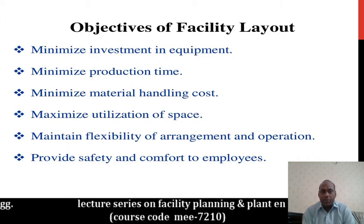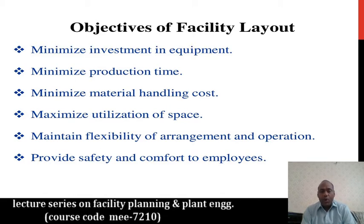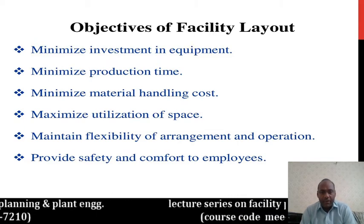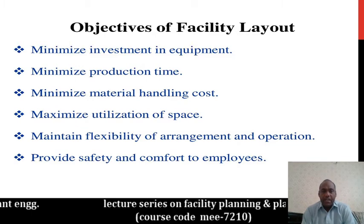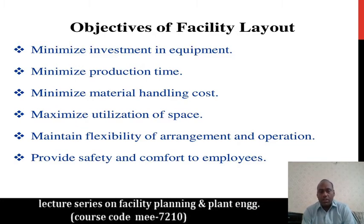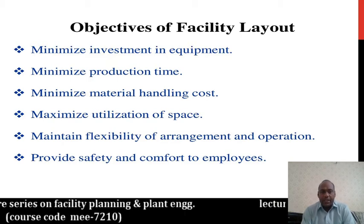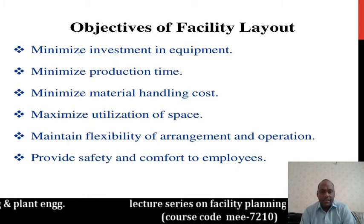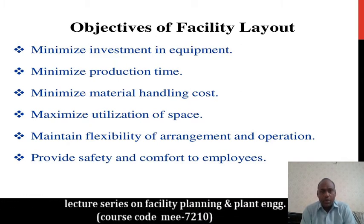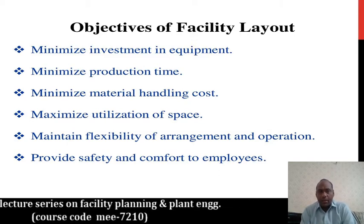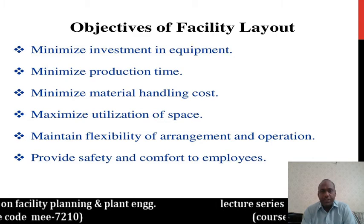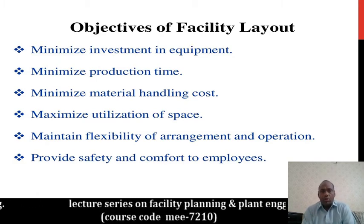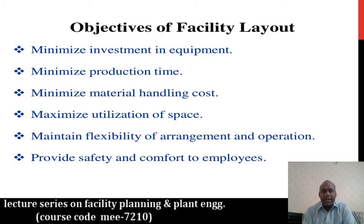Production time should also be minimized. If you are in a medium or heavy type product industry, production time is most important. Suppose your layout is the process layout — here production time will increase as compared to the product layout. So the second objective in your layout planning is to minimize production time. You should also reduce material handling cost.